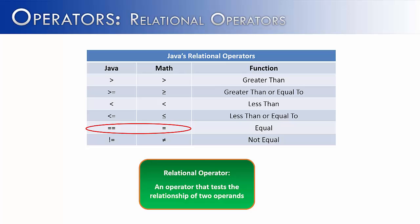And then the last, probably most confusing or most often mistaken, is the equal sign versus the double equal sign. The double equal sign means equal, and we're going to show you the difference in the next slide.